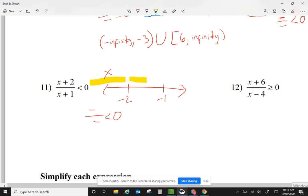Let's check the middle section. Any number between negative 2 and negative 1. Think of negative 1.5. Negative 1.5 plus 2, that's a positive. Negative 1.5 plus 1, that's a negative. Positive divided by negative is less than 0. Yeah, that's true.